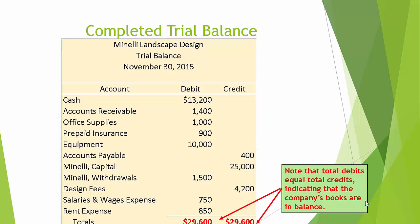Here's the completed trial balance. Note that the total debits, $29,600, equals total credits, $29,600. This indicates that the company's books are in balance.